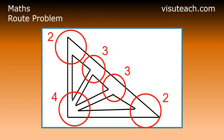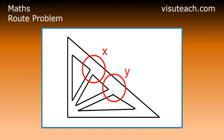Note that a path which covers every street without visiting a street more than once around the fifth housing estate, E, can be found by starting at a vertex of odd degree. So we could start the path at vertex X or vertex Y. Starting at vertex X, one possible path is the following.